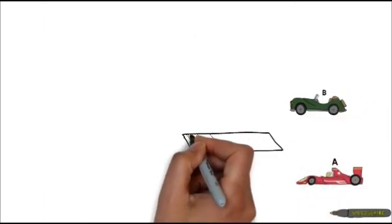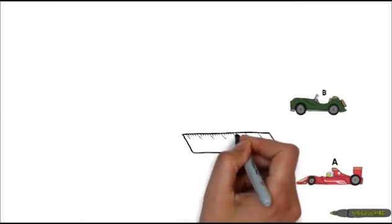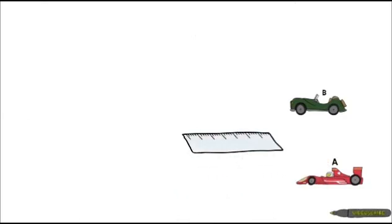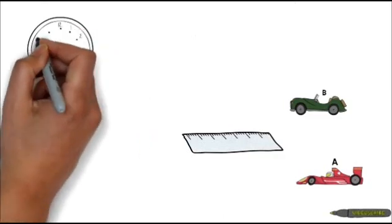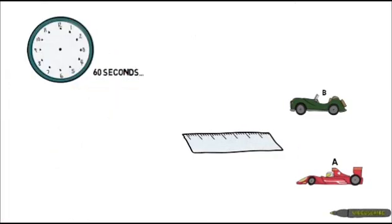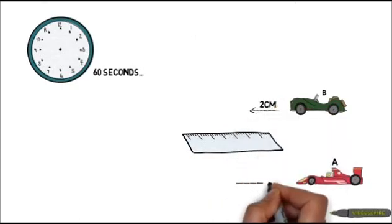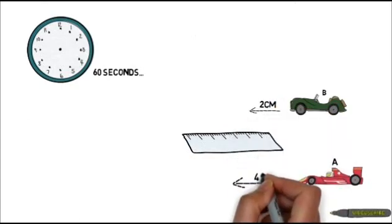Okay, you can see that we've got two cars, car A and car B, with a meter stick in between them to measure their distance traveled and position. For the experiment, you'll let the cars run for 60 seconds, stop them, then mark down their position. Let's say that car A moves four centimeters, while car B moves two.